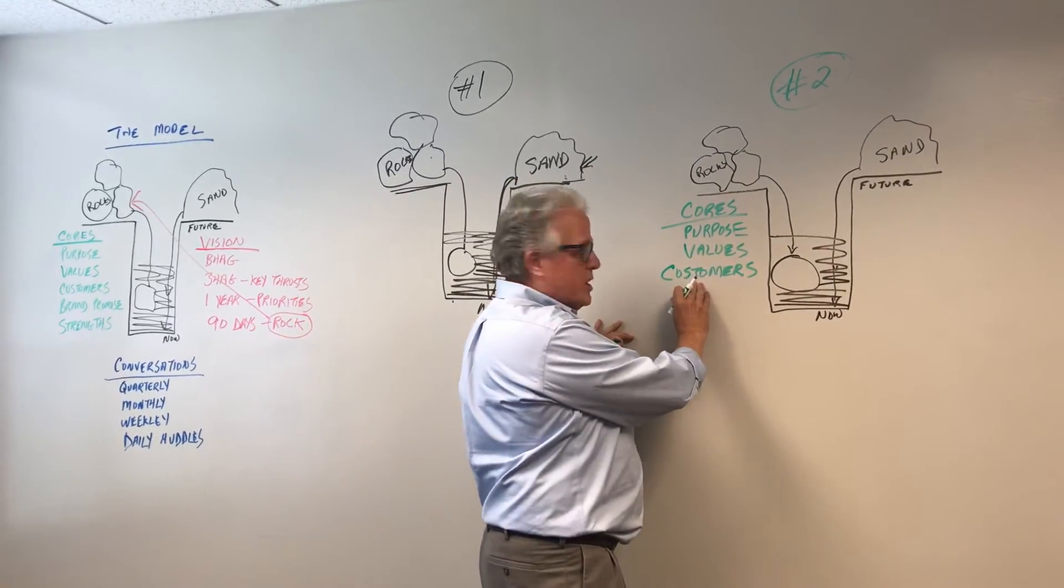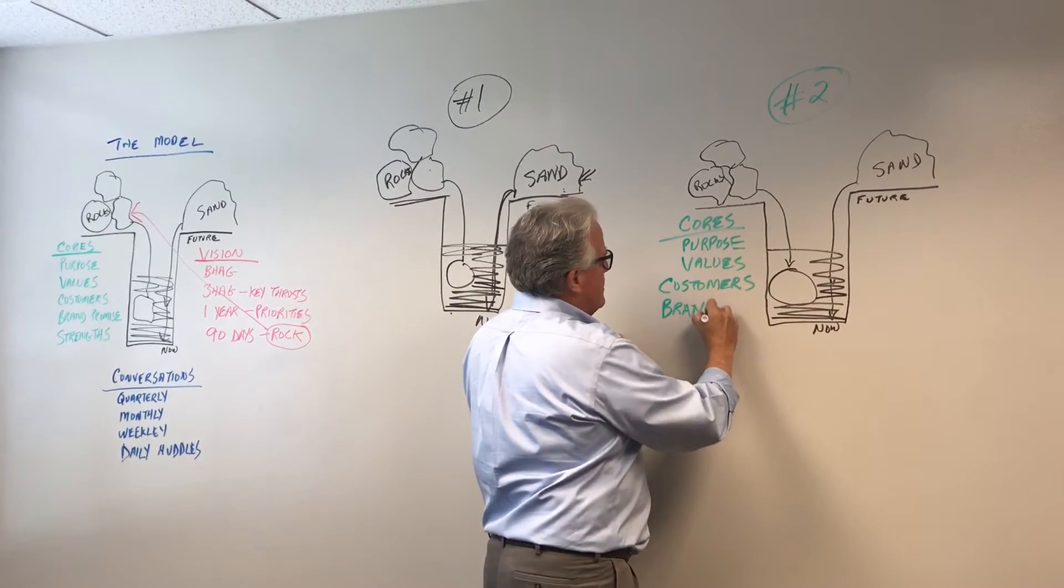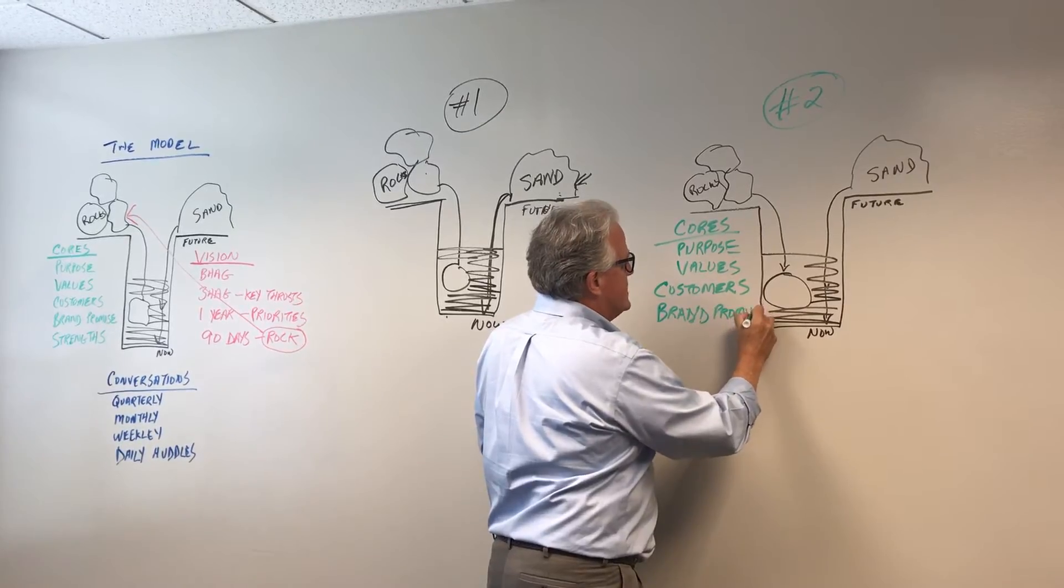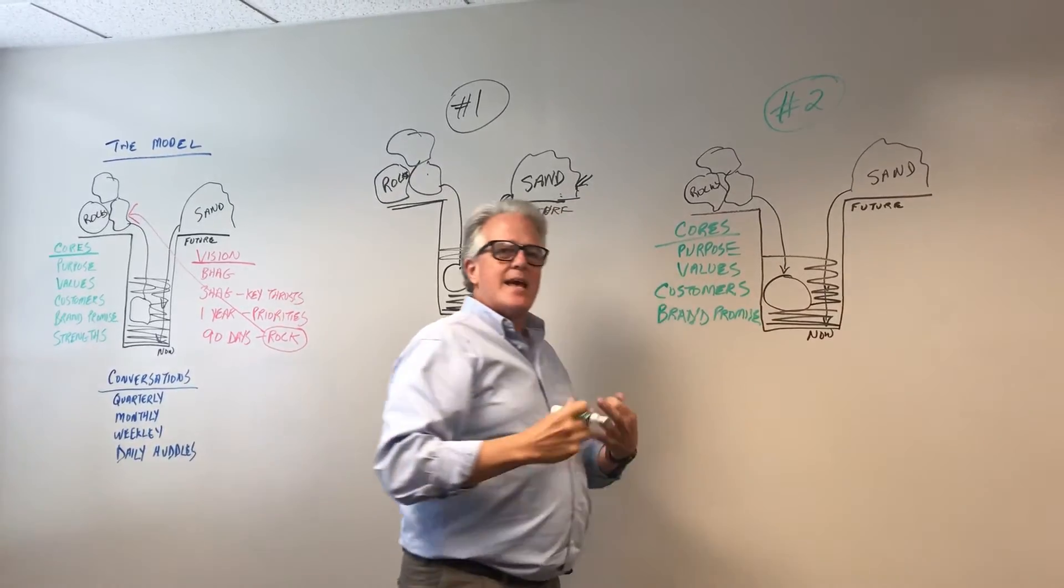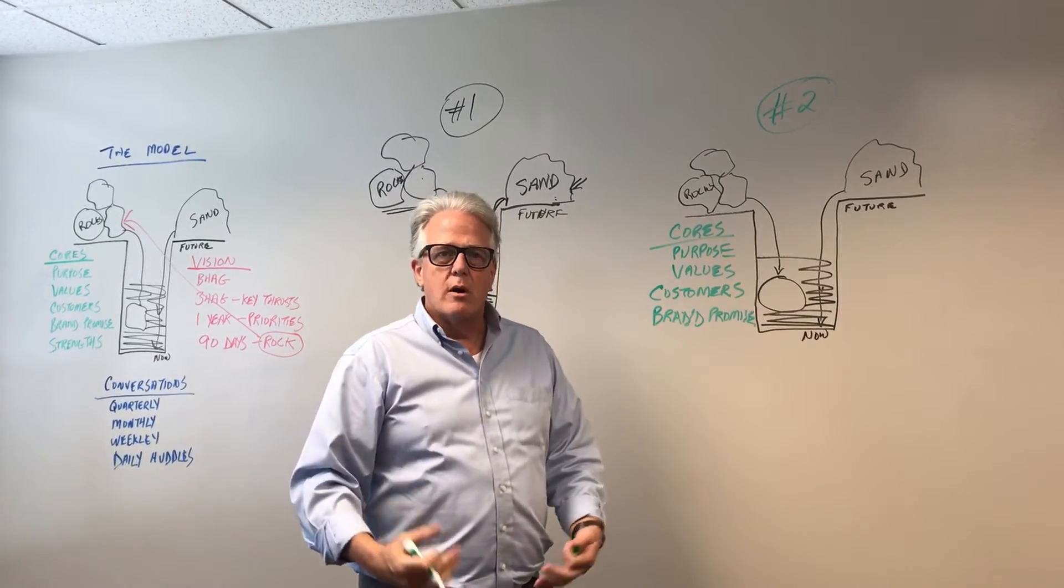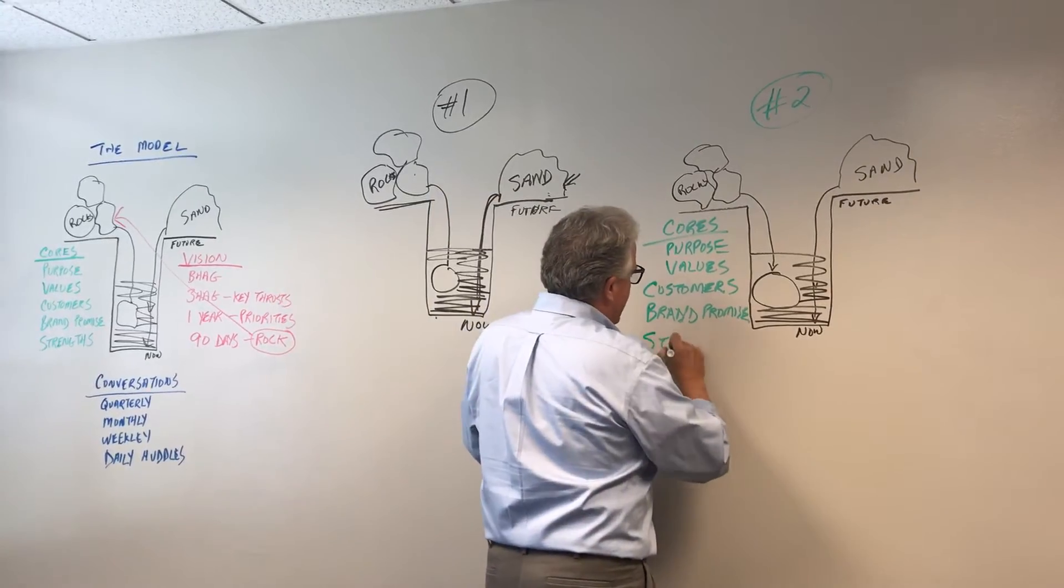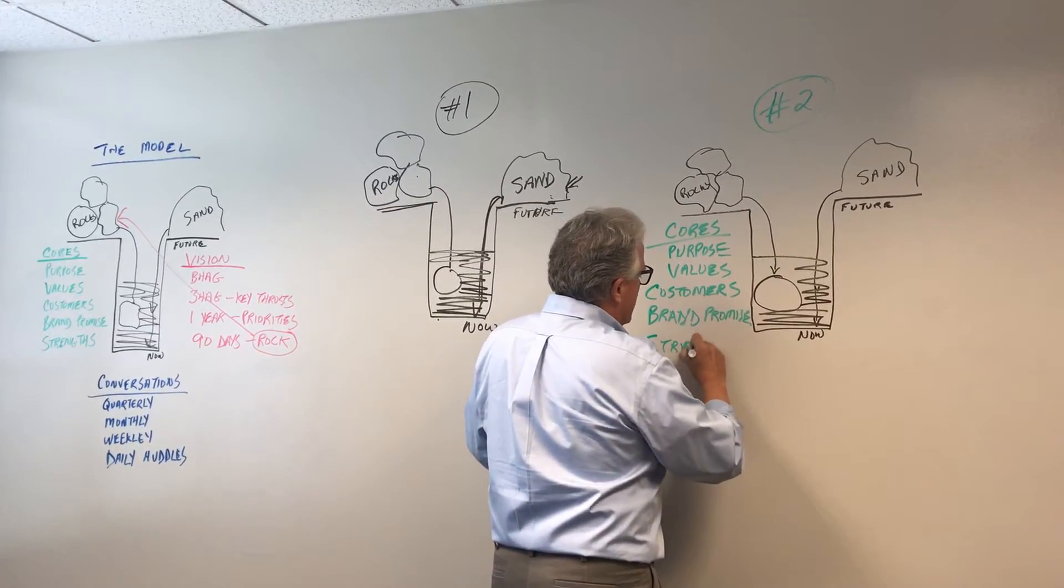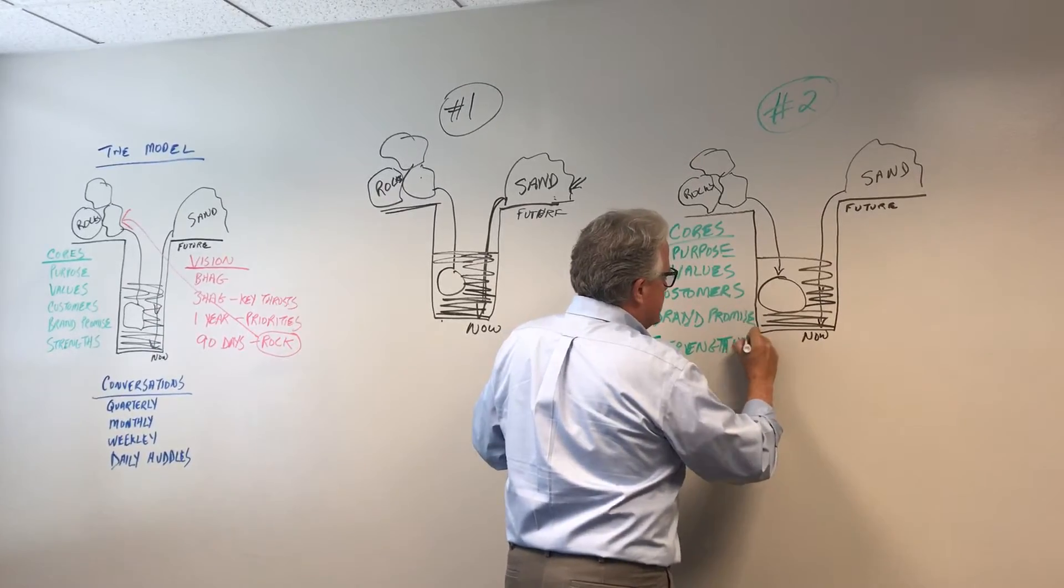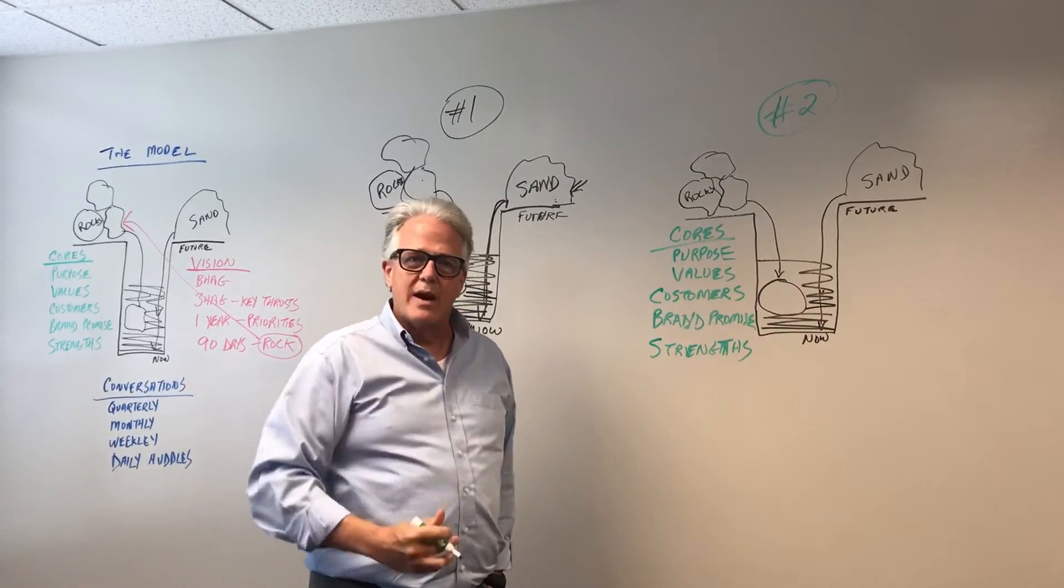After you figure out the core customers then you can figure out a brand promise, which is the promise you're making to your customers that makes them want to buy from you. Makes them take your phone call. Makes them get engaged with you. And finally you need to examine and define what your strengths are because you have to build your business on your strengths not your weaknesses. You build from your strengths to get around your weaknesses.